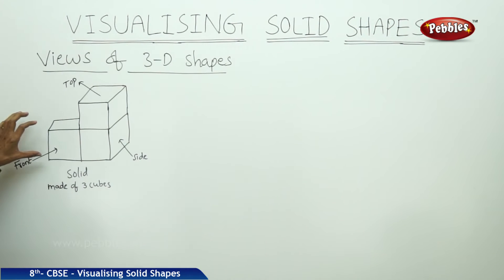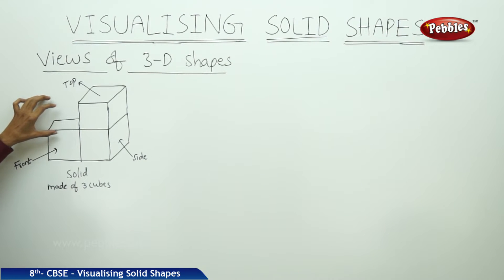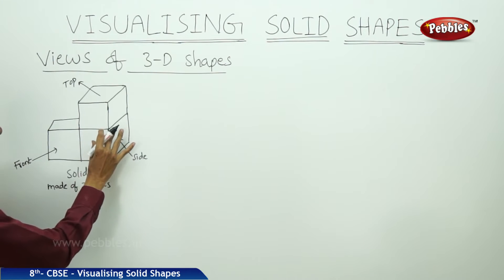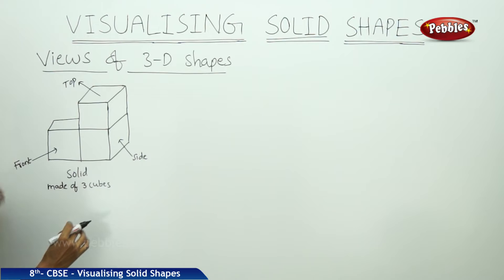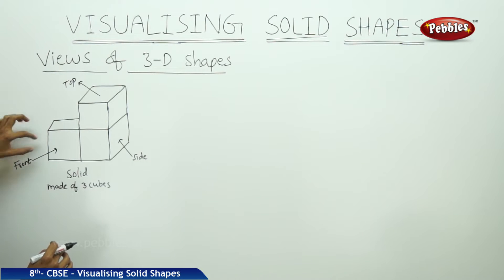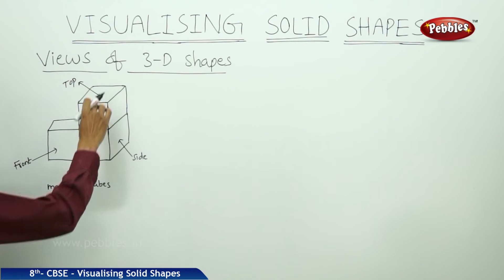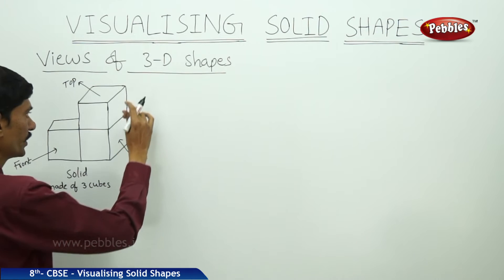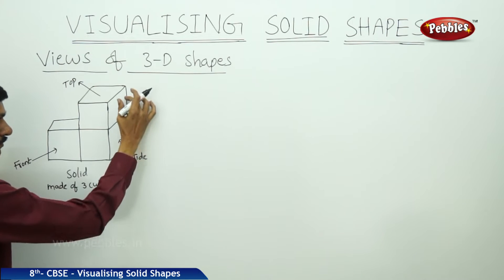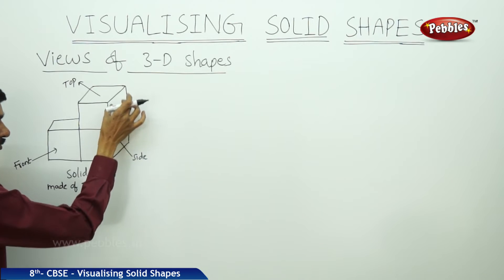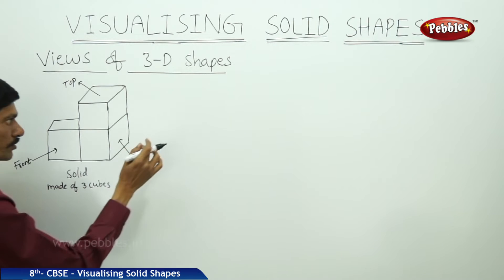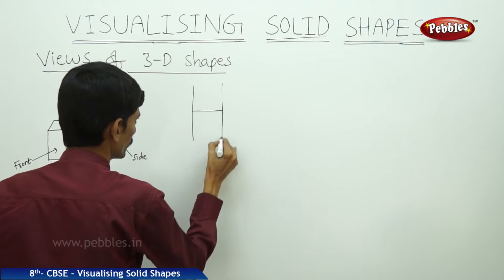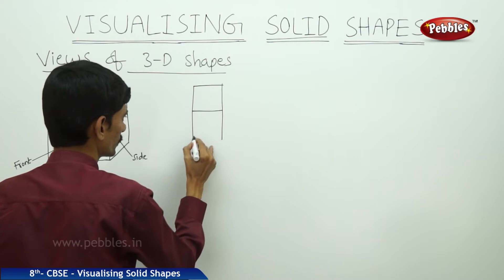We can combine cubes to get different solid shapes. Let us combine three cubes. This is a solid formed by the combination of three cubes. Here we have the front view, side view, and top view. If you observe the side view, two cubes are appearing. We can see two squares from the side view, and these two squares represent the two cubes seen from the side.